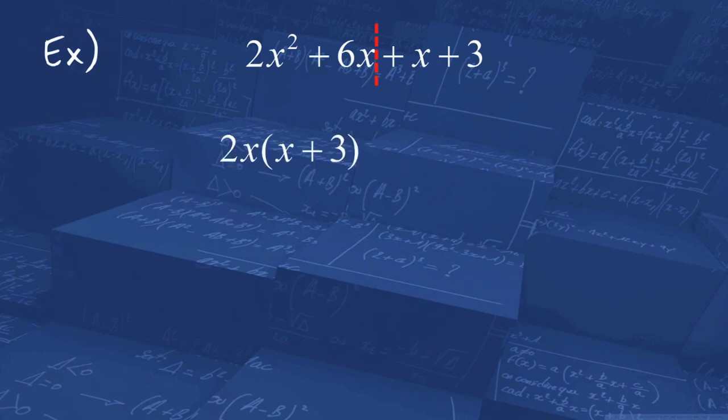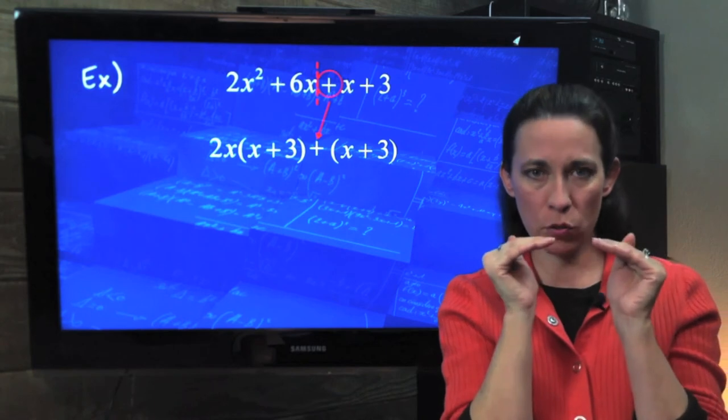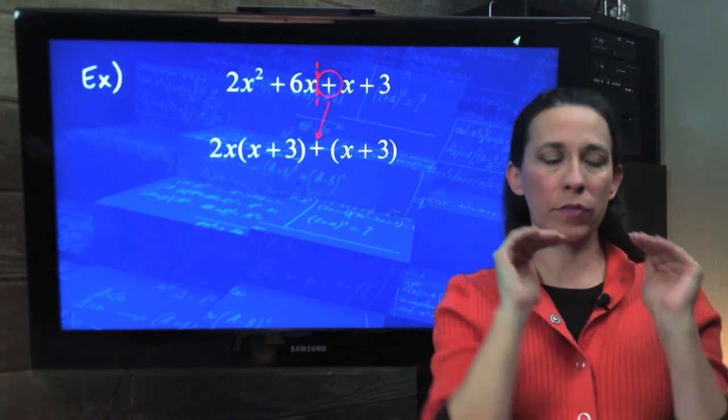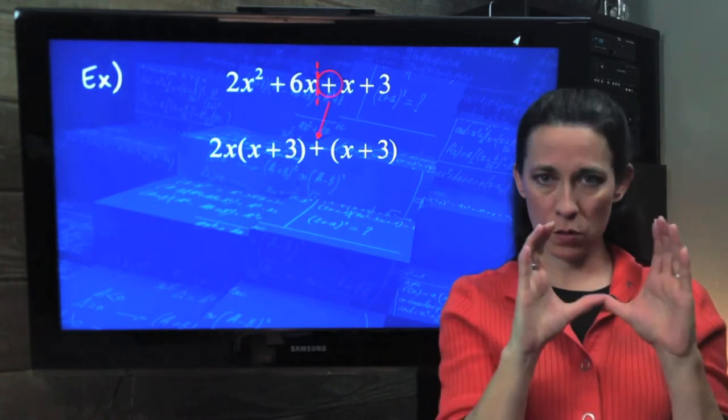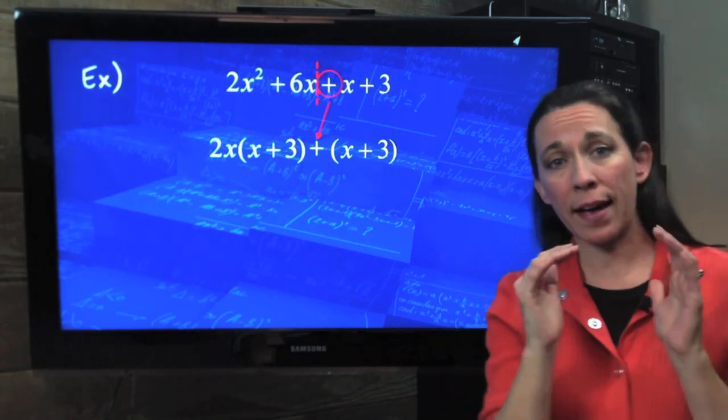GCF on the first half would be a 2x, leaving us with an x + 3. Now on the second half, your front runner there is plus, a positive. So we're going to take out a positive GCF. But notice really there's no GCF between x and +3 other than 1. So you can go ahead and put parentheses around the x + 3 to remind yourself, I've looked for a GCF. This is factored as much as it can go, and so it's a binomial by itself, the x + 3.